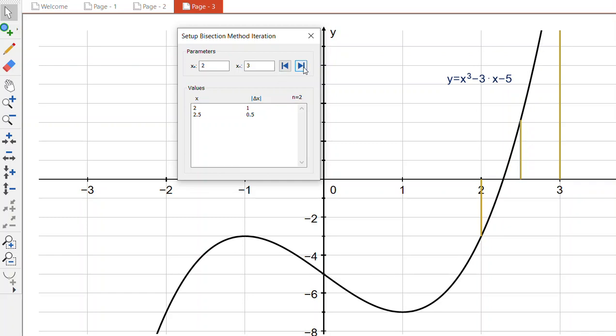If I do the next one, I'm going to half that interval again, and so we go 2.25 to 2.5 and that's an interval size of 0.25.